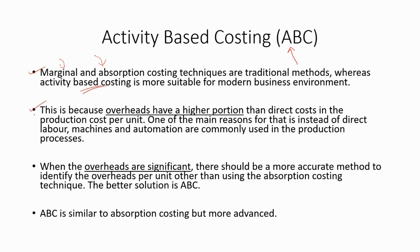Overheads have a higher portion than direct costs in the production cost per unit. One of the main reasons for that is, instead of direct labor, machines and automation are commonly used in the production process. This is why the modern business environment is different from traditional environments. When overheads are significant, there should be a more accurate method to identify the overheads per unit, other than using the absorption costing technique. The better solution is ABC.